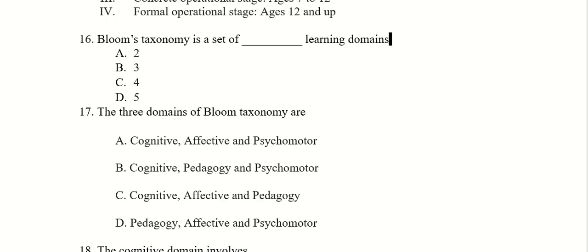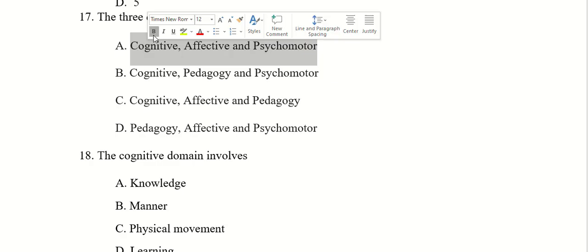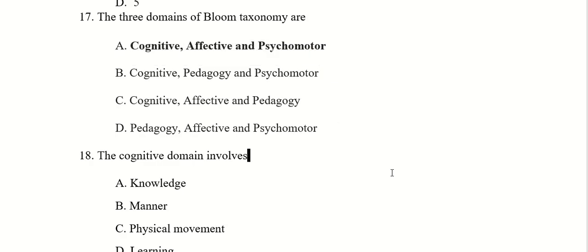What are the learning domains? Bloom's taxonomy is a set of three domains. You have the three domains of Bloom's taxonomy. The three domains are cognitive, affective and psychomotor. Right answer, you have cognitive, affective and psychomotor. Bloom's taxonomy, it's three learning domains: cognitive, affective and psychomotor.